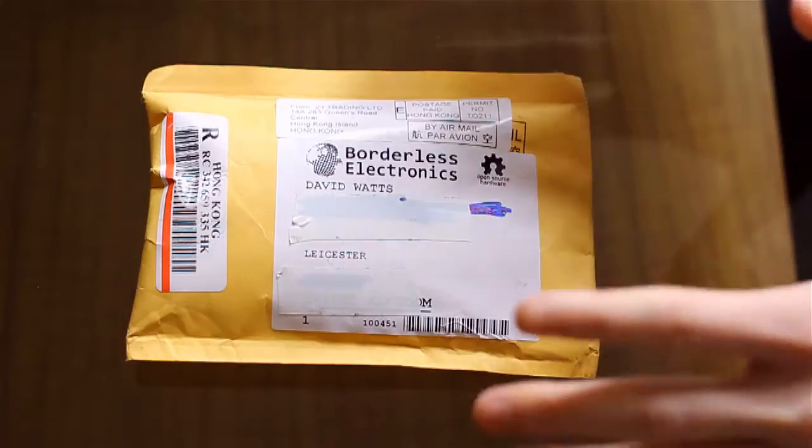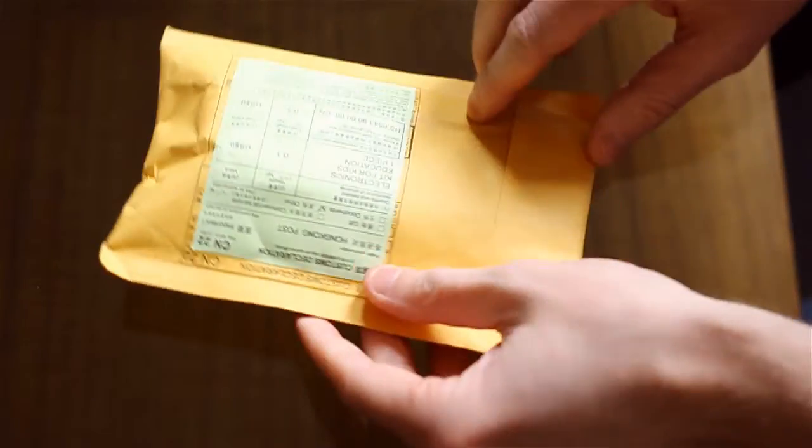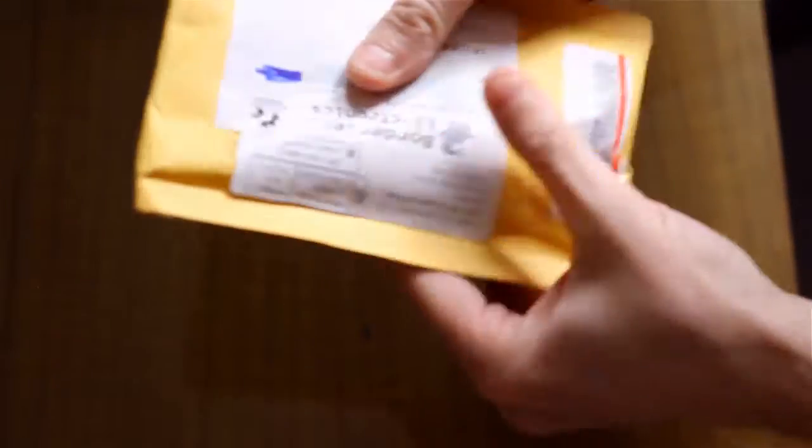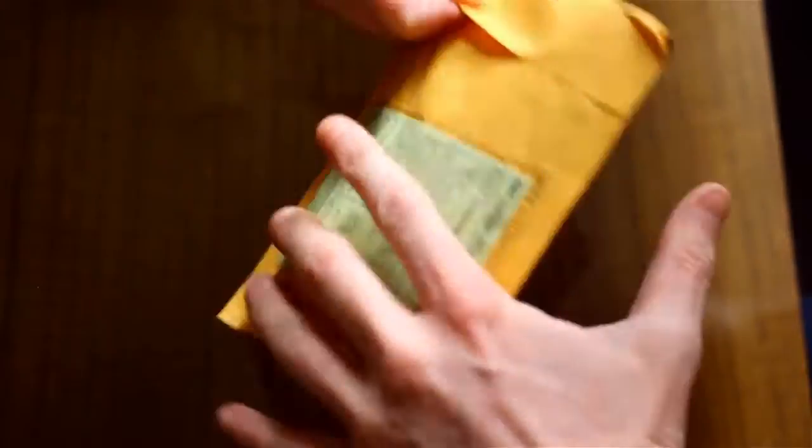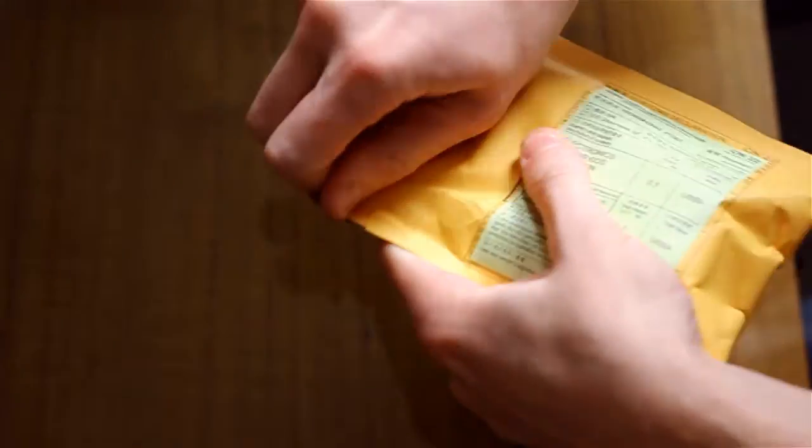I've blocked out my address. So let's get to it. Right. So here it is, the moment of truth. This is kind of exciting. So it's just a standard padded envelope with a nice Borderless Electronics logo there. It's pretty cool. Open source hardware.